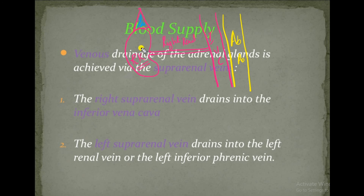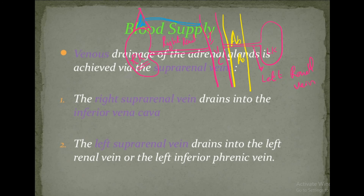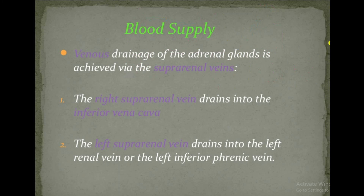The right suprarenal gland has direct drainage to the inferior vena cava. The left kidney drains into the left renal vein. The left suprarenal gland, which is semi-lunar in shape, drains blood into the left renal vein. So the left suprarenal vein drains into the left renal vein.